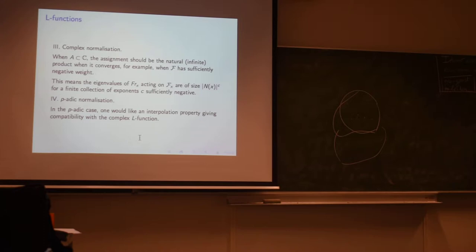And then there's a complex normalization and a p-adic normalization that I won't go into right now. In fact, whenever that product converges, that should actually be the L-function. So the complex normalization says, p-adic normalization says that the p-adic case, for motives anyway, should have an interpolation property including compatibility with the complex L-function. Okay. So those are the difficult L-functions that we don't understand, of course.